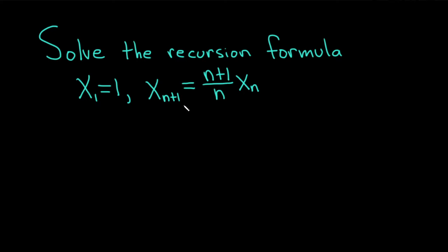Hi, in this video we're going to solve this recursion formula. So we have x sub 1 equal to 1 and then x sub n plus 1 equal to n plus 1 over n all times x sub n. To find basically a formula for x sub n, let's go ahead and go through it very carefully.